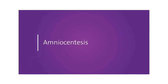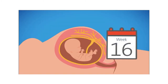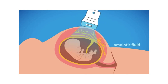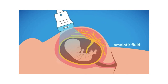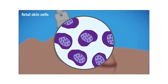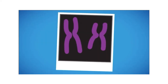Another way is through amniocentesis, which can be done between the 15th and 23rd week of fetal development. The procedure involves obtaining cells from the amniotic fluid surrounding the baby. A thin needle is inserted through the abdomen and about two to three tablespoons of amniotic fluid is removed; this fluid contains skin cells shed by the fetus. The cells are analyzed and a karyotype is produced. This procedure also carries risk — one in every 900 cases of amniocentesis results in a miscarriage.